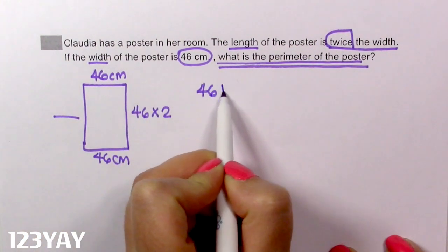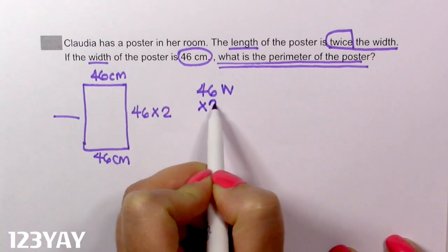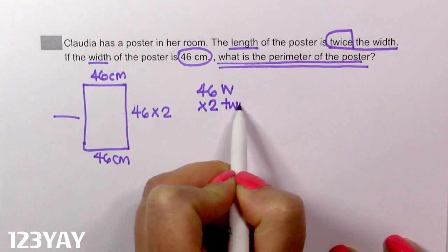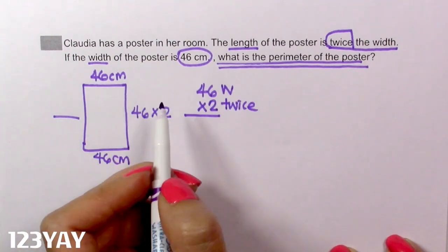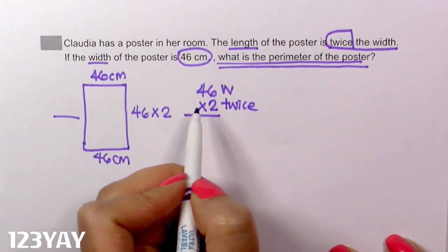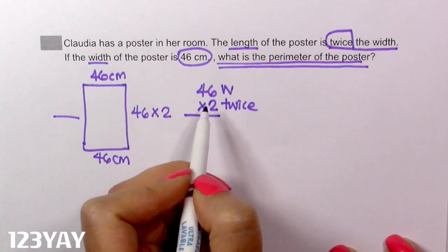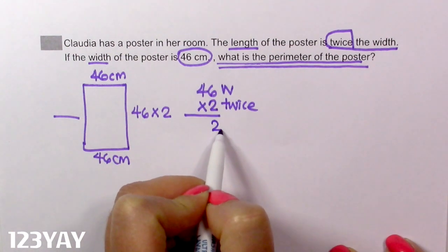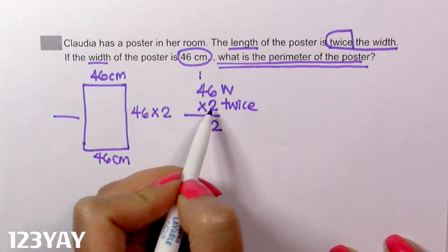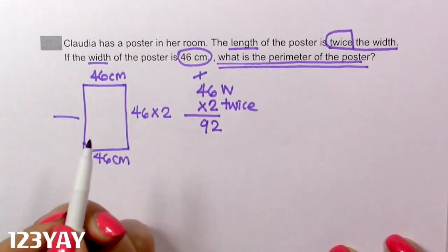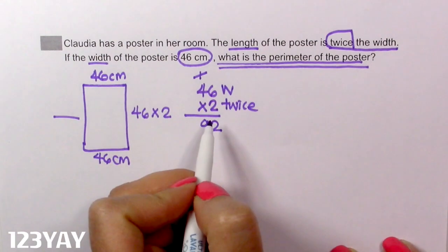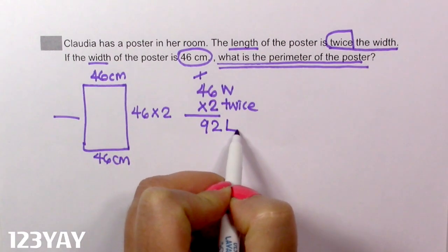46, this is the width, times 2, because it says twice. I always teach my students to label, label, label. Now let's solve this multiplication. 2 times 6, 12. Carry the 1. 2 times 4, 8. Plus 1, 9. Scratch the 1 so you know you carry it. And this is the length.